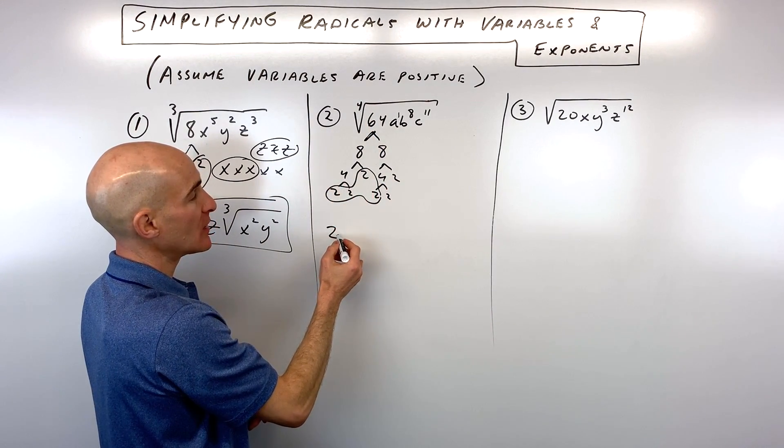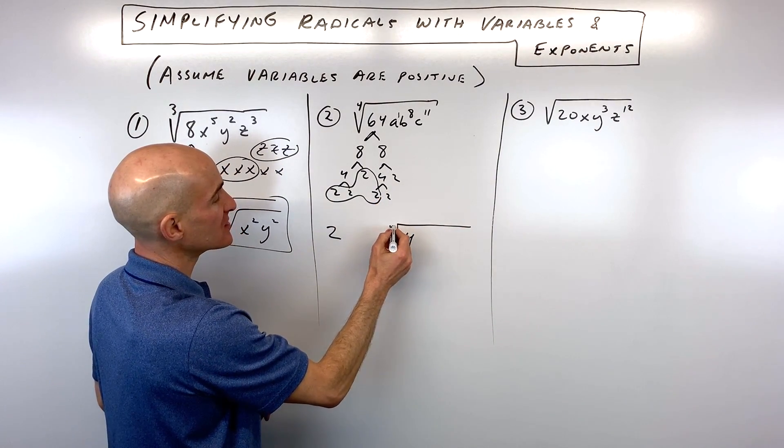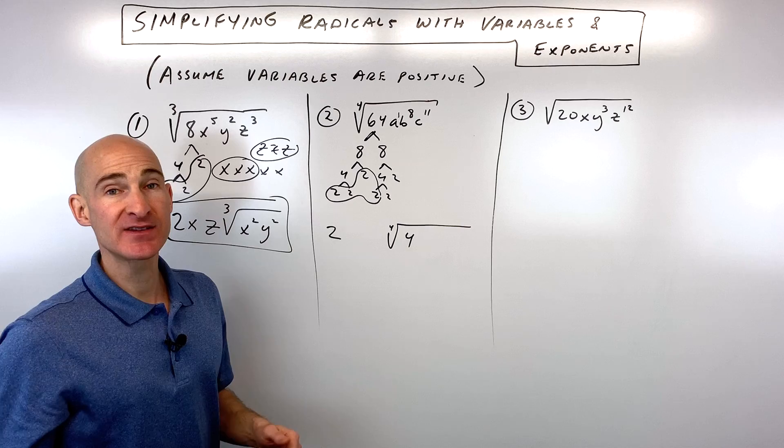Again, for each group, you're just going to get one of that quantity on the outside of the radical. And we're left with 2 times 2, which is 4. That's going to stay underneath the radical. That's like our remainder.